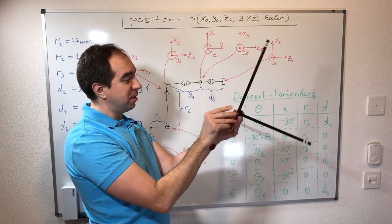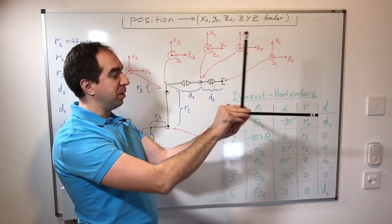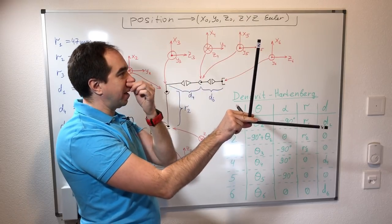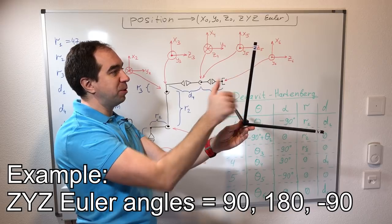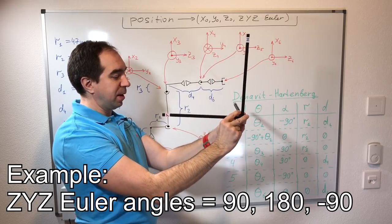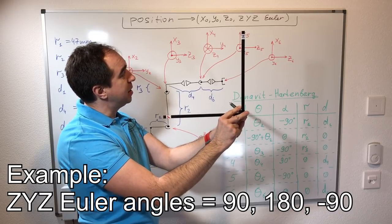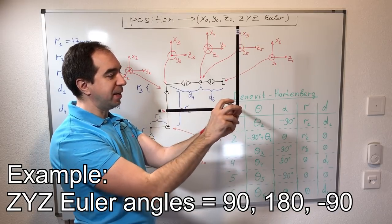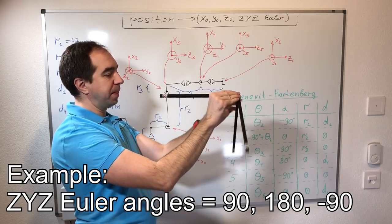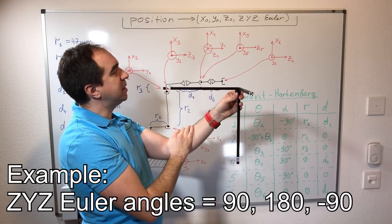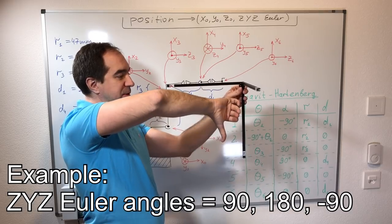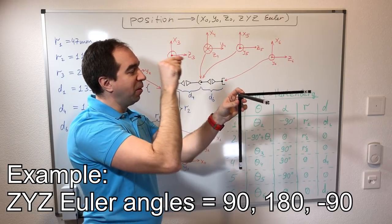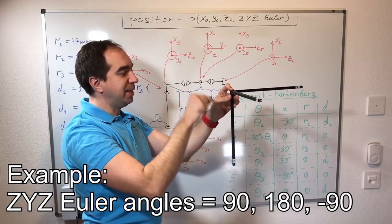For example, if we say the first Euler angle is 90 degrees, it means the coordinate system should be rotated 90 degrees around the z-axis. Then, if the second angle is 180, it means the coordinate system should be rotated around the y-axis 180 degrees. And for example, the last z-axis angle is minus 90 degrees. So this is going to be the end effector position for Z-Y-Z Euler angles of 90, 180, minus 90.